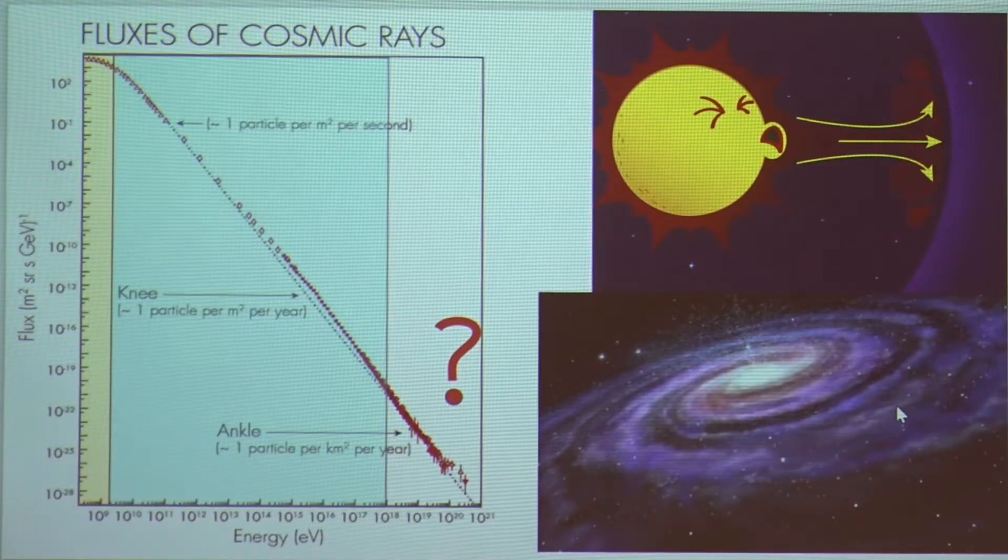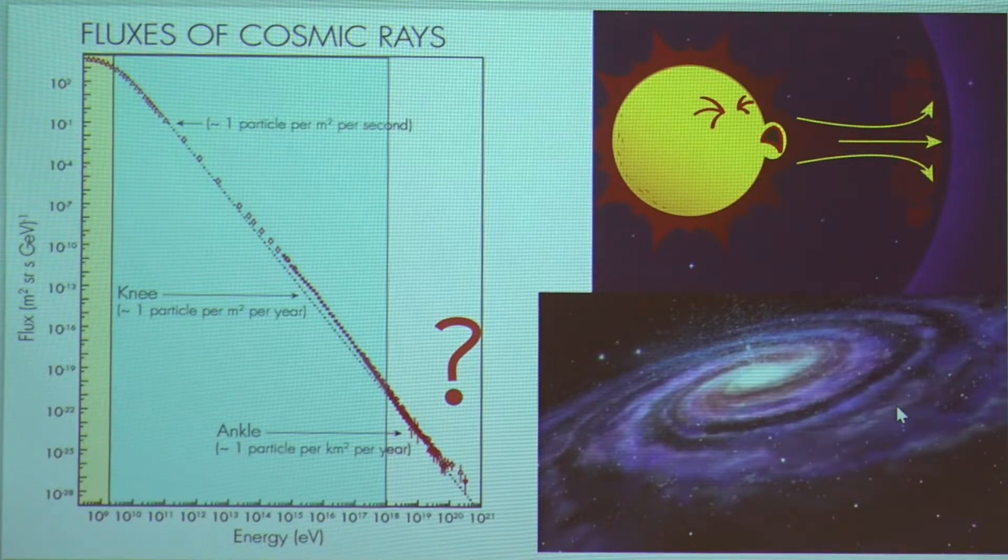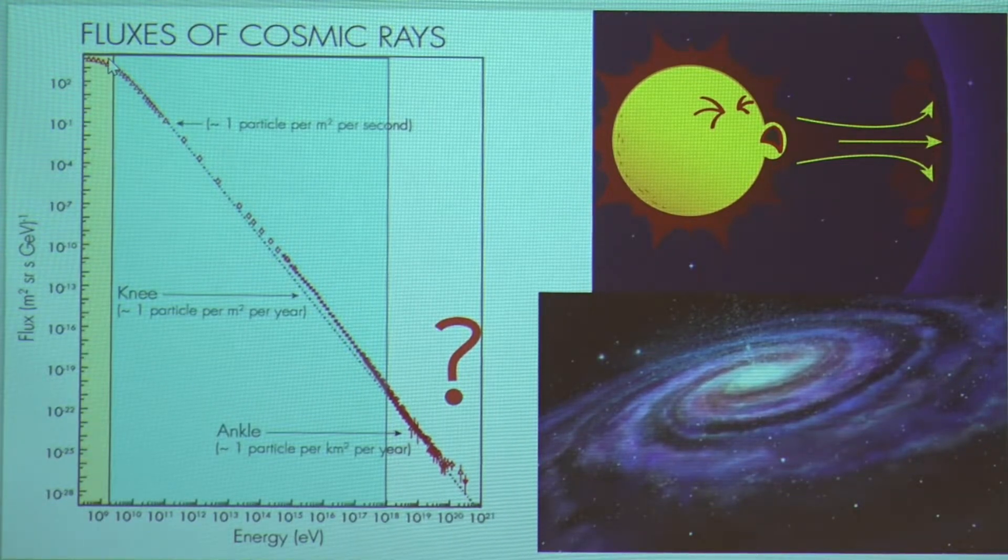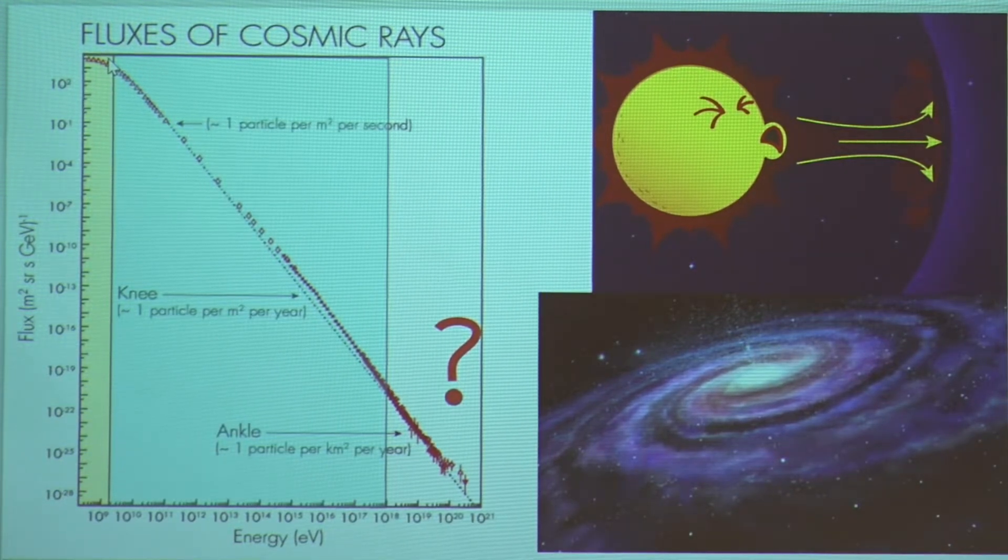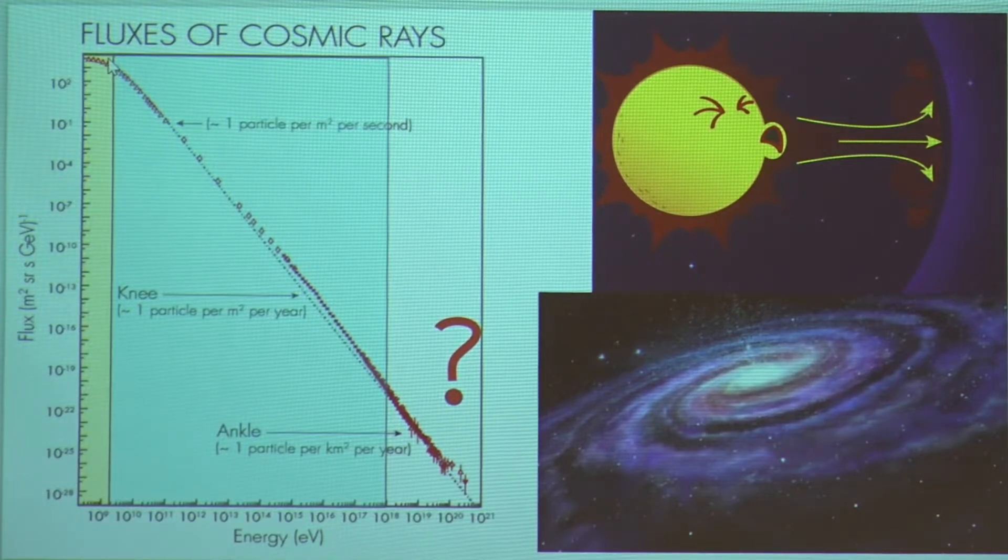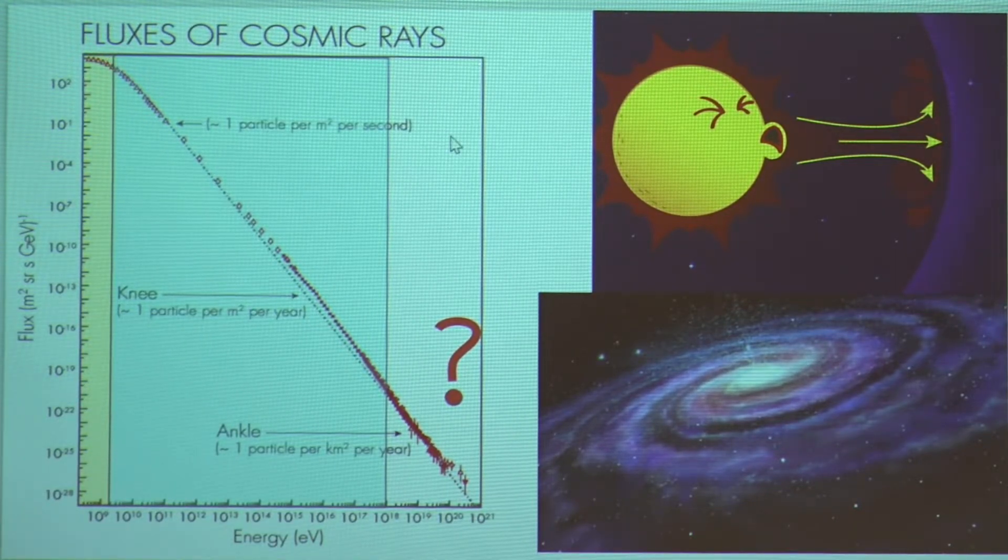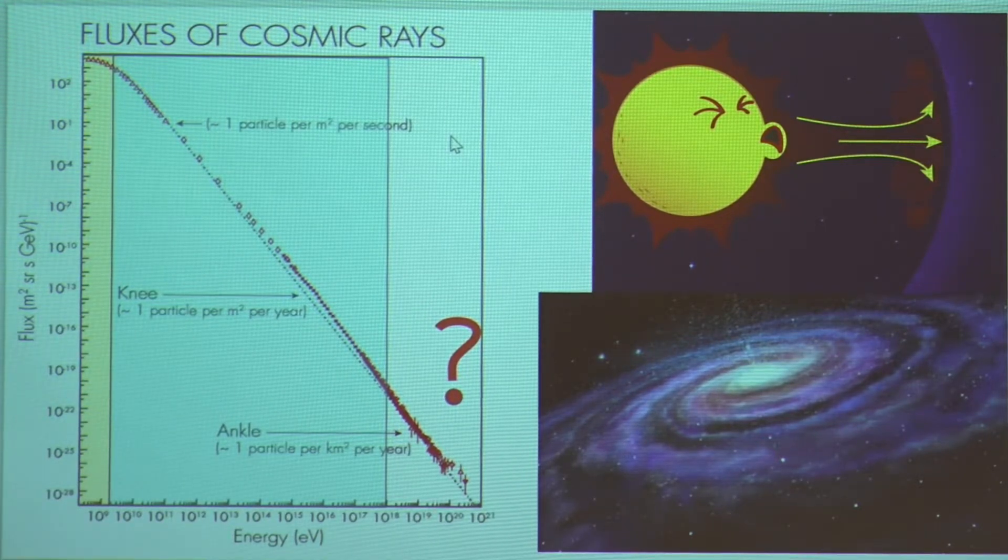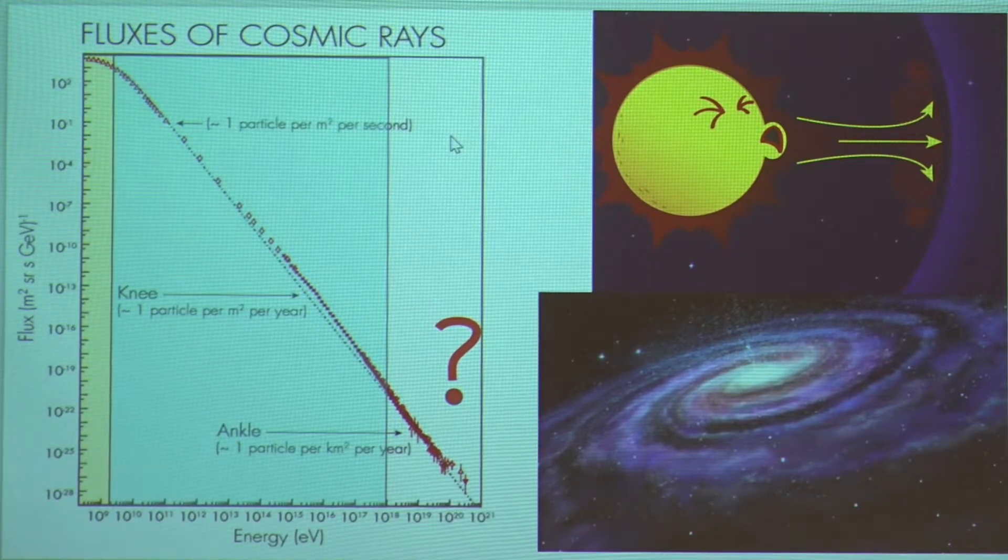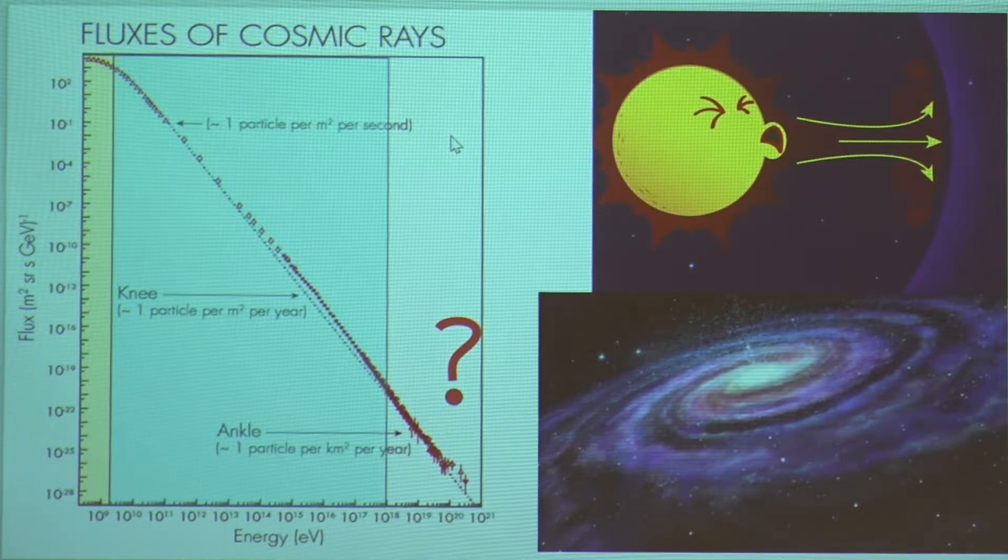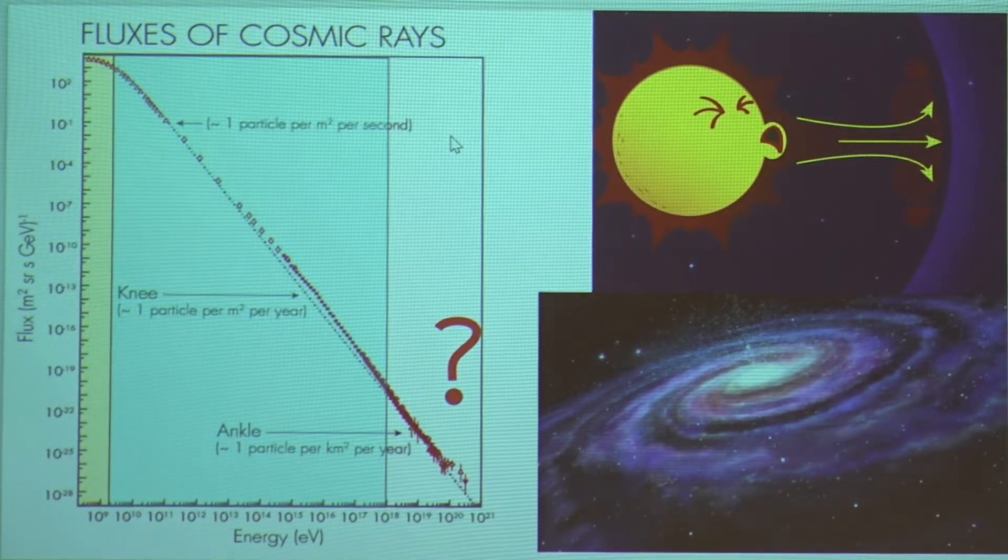So as we can see, a vast majority of these particles lie at the lowest energies. And these are believed to be coming from the extreme events happening on or in the surface of the sun. Then as we move to higher energy, we have high energy cosmic rays or very high energy cosmic rays, which we believe are coming from explosive events or high energy events happening in our own galaxy, that is Milky Way.